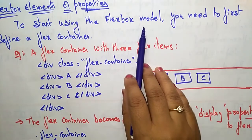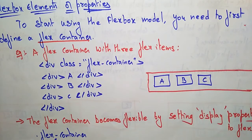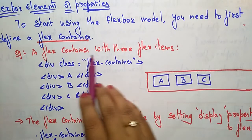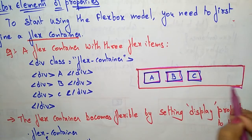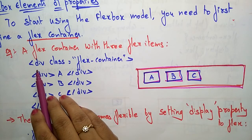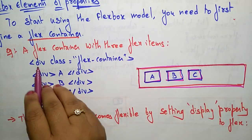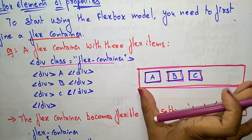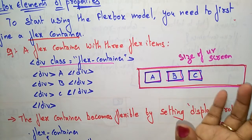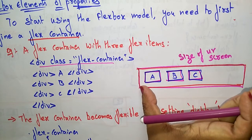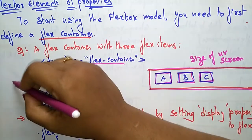To start using the flexbox model, you need to first define a flex container. For example, to display items A, B, C in a flex container, you write: div class equal to 'flex-container', then divs A, B, C, and close the div. This code is written inside the body tag. This container will be the size of your screen — mobile, laptop, or tablet — when you set div class equal to 'flex-container'.